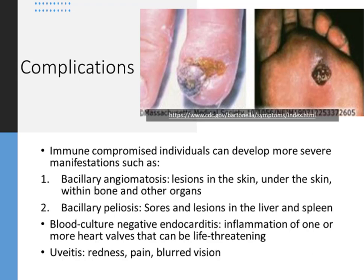There can be severe complications associated with Bartonella henselae or other species infections beyond cat scratch disease. Immunocompromised individuals can develop more severe manifestations like bacillary angiomatosis — lesions in or under the skin, within the bone, and in other organs. Patients may also develop bacillary peliosis, which are sores and lesions in the liver and spleen. Blood culture-negative endocarditis is commonly seen with inflammation of one or more heart valves, which can be life-threatening. Uveitis manifests as redness, pain, and blurred vision.